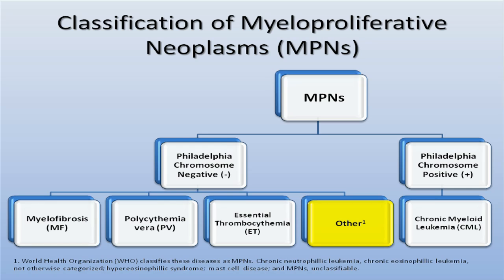In addition to those four classical MPNs, there's a whole range of other conditions including myeloproliferative dysplastic overlap syndromes like RARS with thrombocytosis, chronic myelomonocytic leukemia, the recently well-characterized chronic eosinophilic leukemias, and other conditions such as systemic mastocytosis.